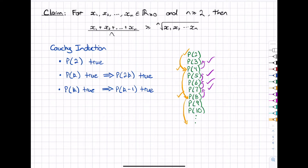So that's the idea behind Cauchy induction — it's quite a neat way of collecting all the values of n we're interested in. In some scenarios it simplifies the proof, and it certainly simplifies the proof of the AM-GM inequality. With regular induction it's still doable, it just becomes a little bit more involved. So now let's jump into the actual proof using Cauchy induction.